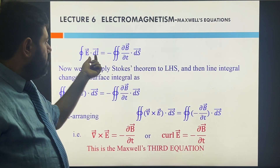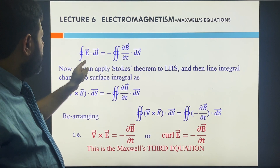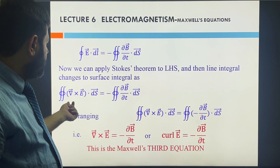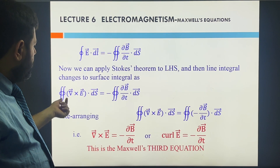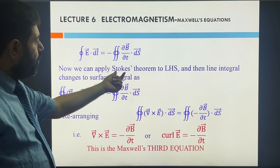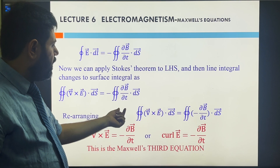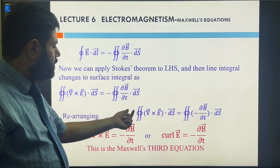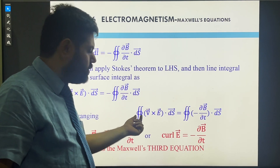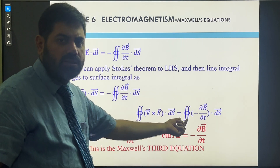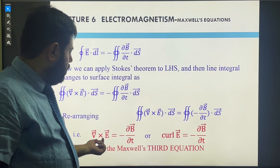Using the same Stokes theorem, we can convert the line integral into a surface integral. This equation has been modified from line to surface by following the Stokes theorem: curl of E equals (∂B/∂t)·dS. When we rearrange the surface integrals on both sides, since both sides have the same surface integral, it can be cancelled.